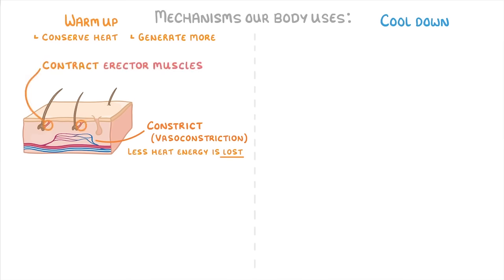We also contract erector muscles, which makes our hairs stand on end. The idea here is that we trap a small layer of insulating air, which means that it's harder to lose heat from our skin, and so helps to keep us warm.